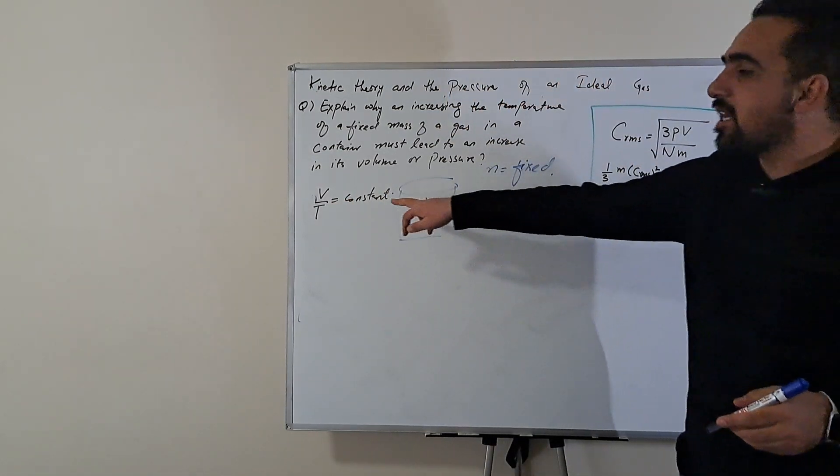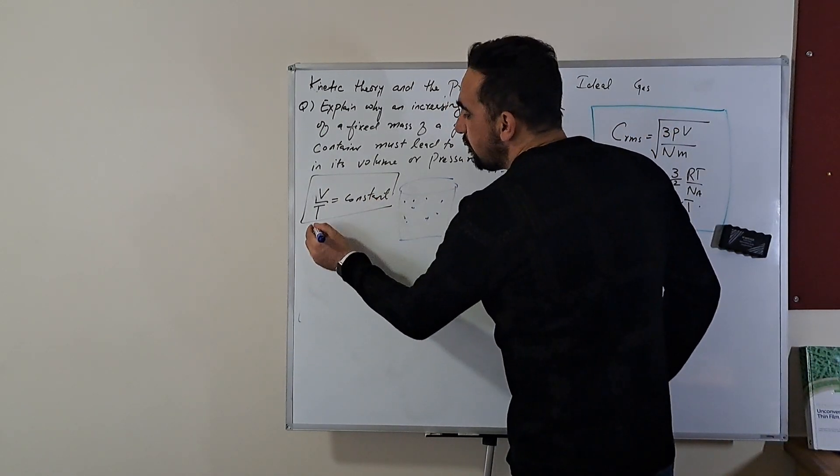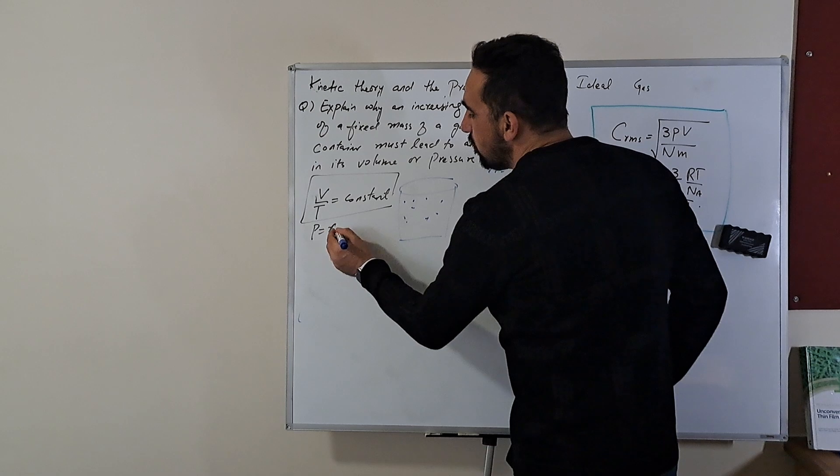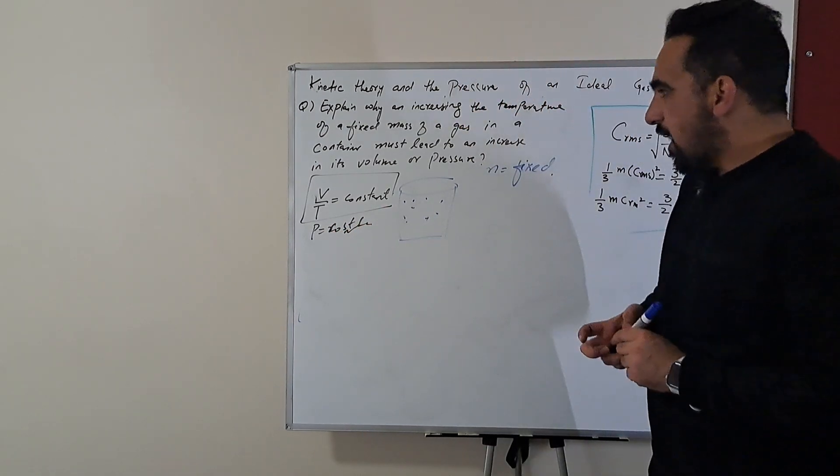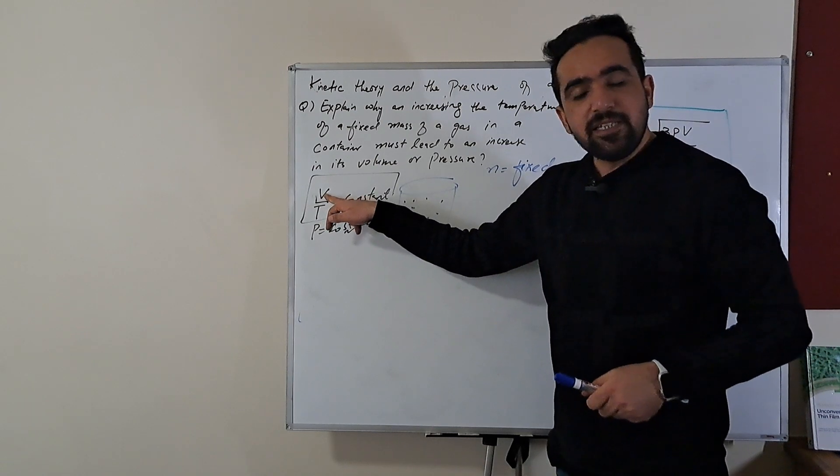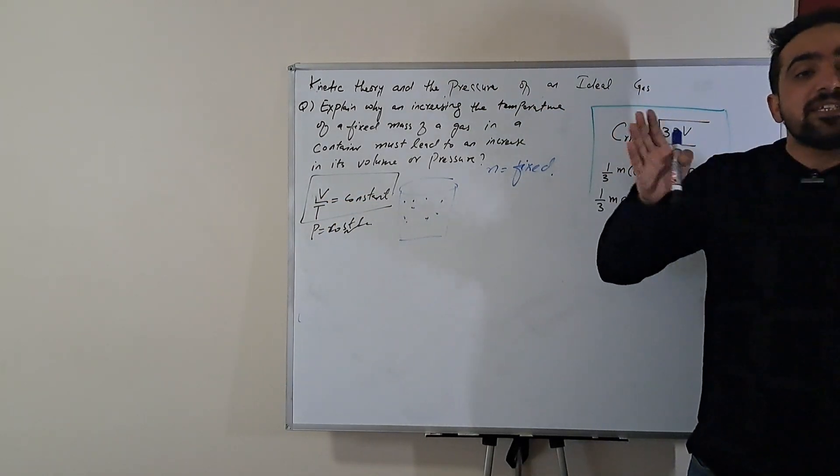So this is actually Charles's law. When this law is valid it's only valid when we keep pressure also constant. So this law states that increasing the temperature of the ideal gas will increase the volume.